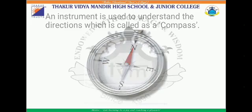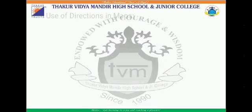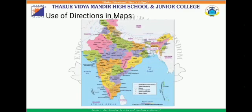Let us now know how we can use directions in maps. This is the map of India. Here we can see the directions are shown — they are indicated with arrows pointing the East, West, North, and South directions. By understanding this, you will be able to identify the directions of places on the map easily.